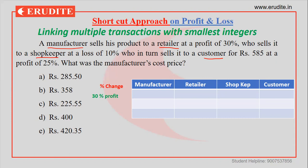First information: the manufacturer sells at 30% profit to the retailer. Whenever we see 30% profit, 30 is nothing but 3 by 10 as a fraction, and we will try to bring it in this format. So 3 by 10 means if manufacturer's cost is 10, then 3 will be the profit, so the retailer's price would be 13. If it is 10, it would be 13.